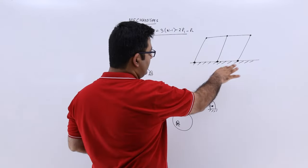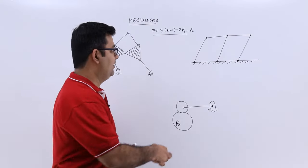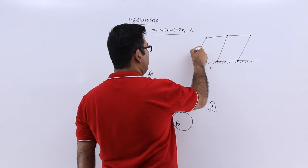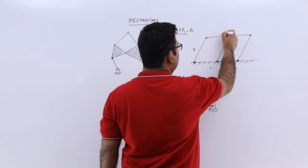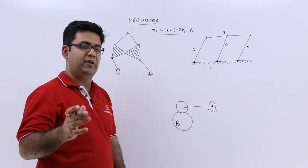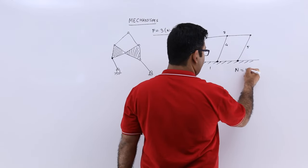So in this figure let us count the number of links first. You have the same fixed link, so you have 1, 2, this is a single link, so this becomes link 3, link 4, and link 5. So total number of links is 5, so capital N becomes 5.